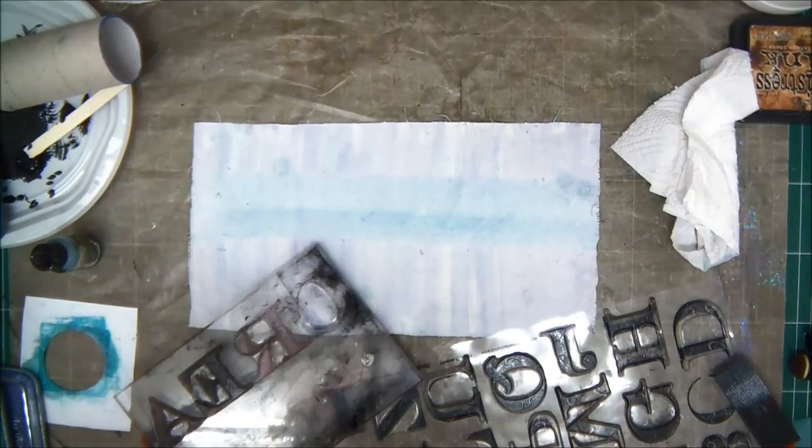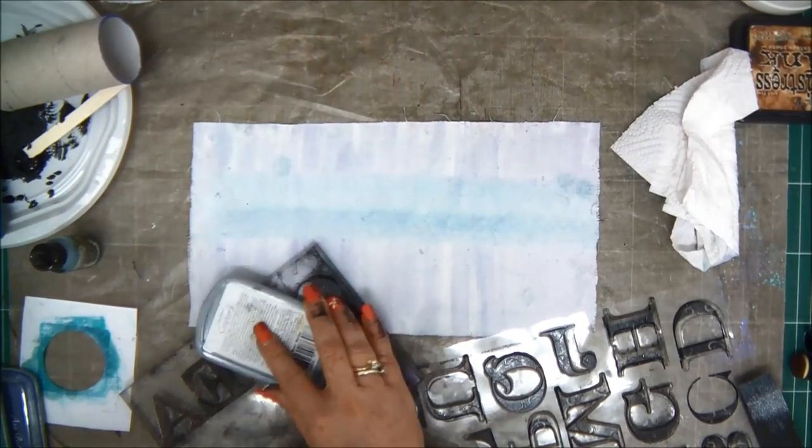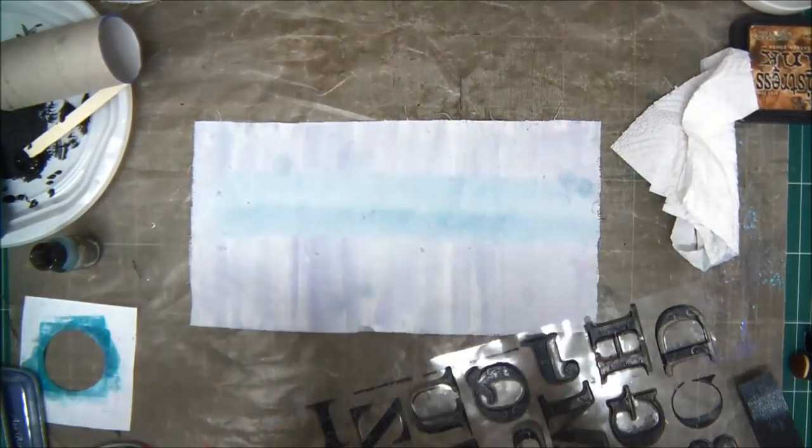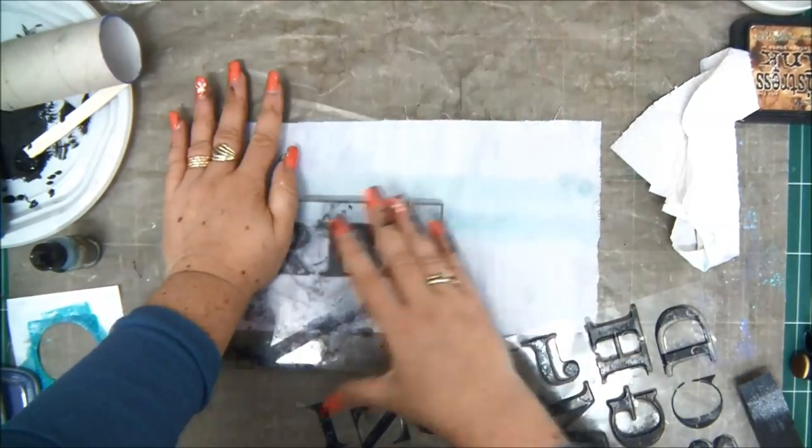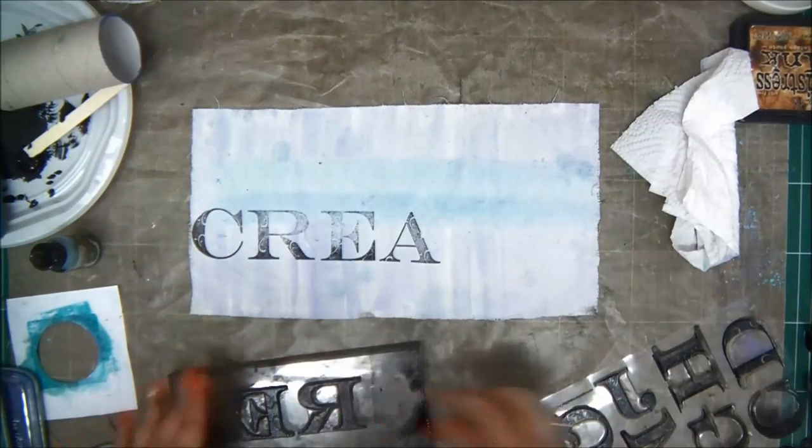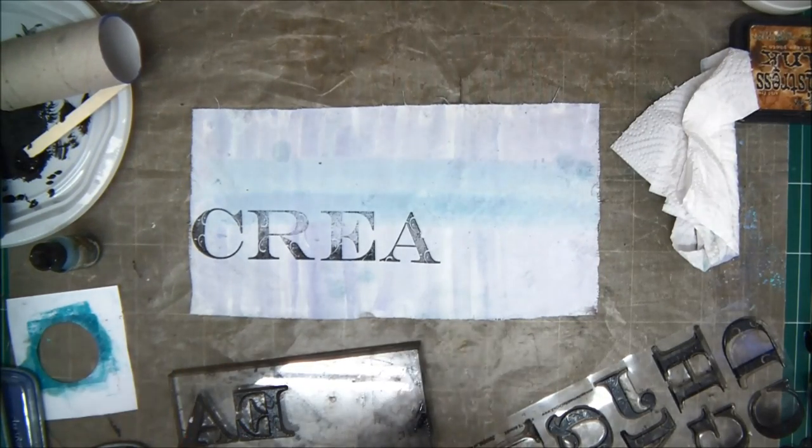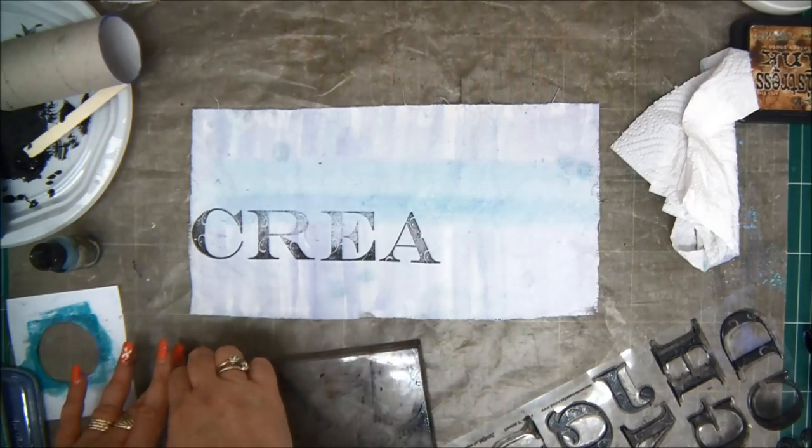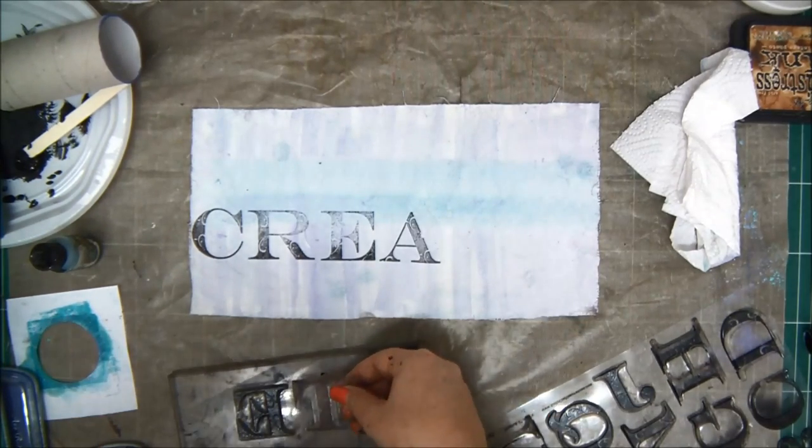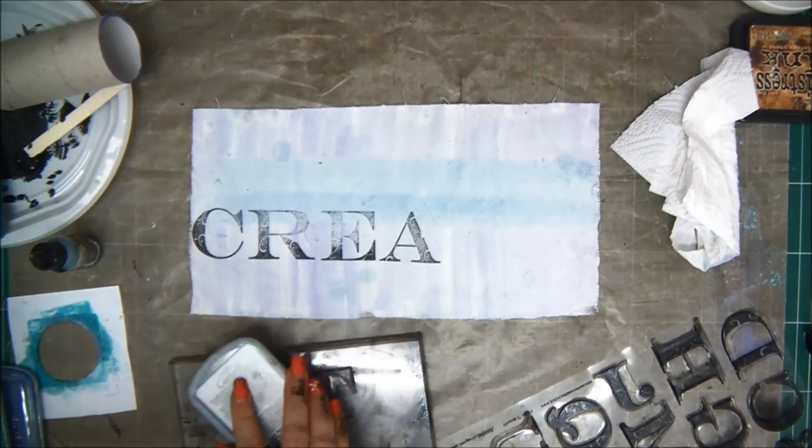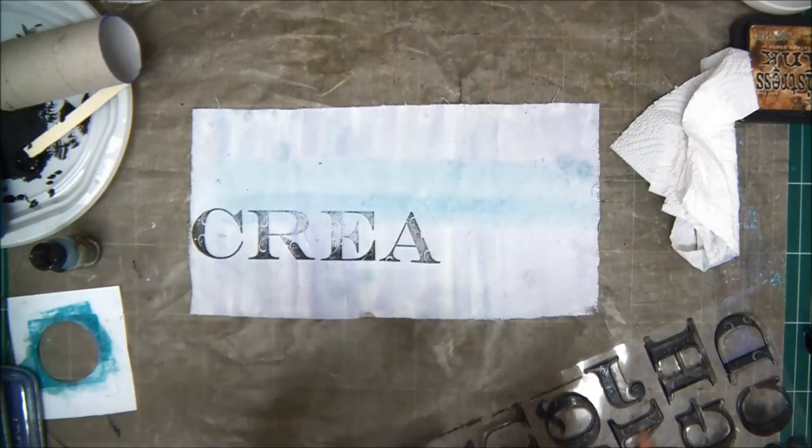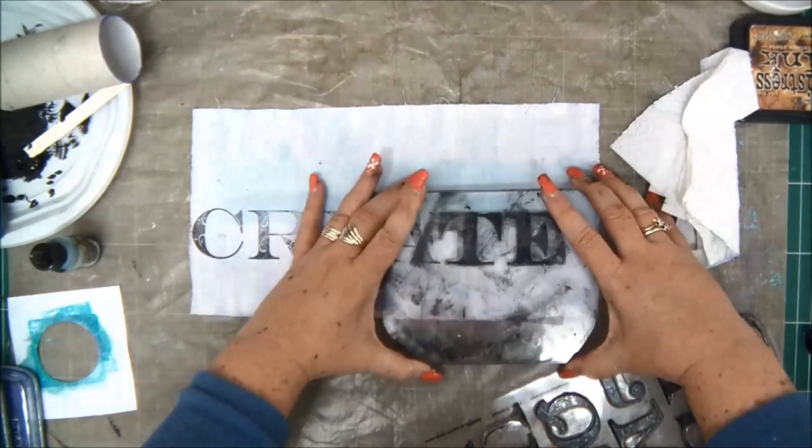Now going back to the first page, make sure it's dry. And I'm going to spell the word create. Now because this is going to be the center page, I can spell out that word across the entire page because it's going to be in the middle. So nothing is going to cover the word. So I have no problem of having the word across the length of the page. So let's add the T and the E, create.